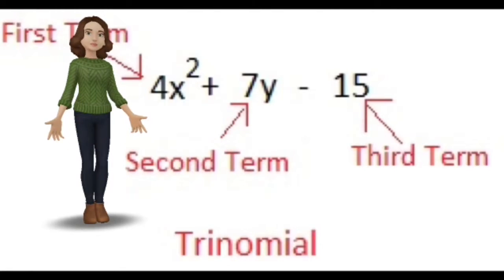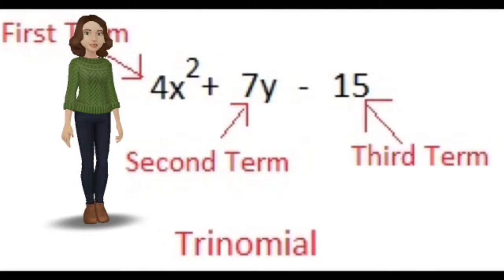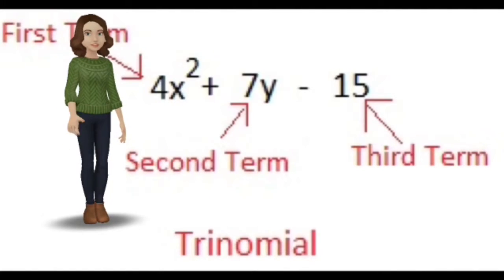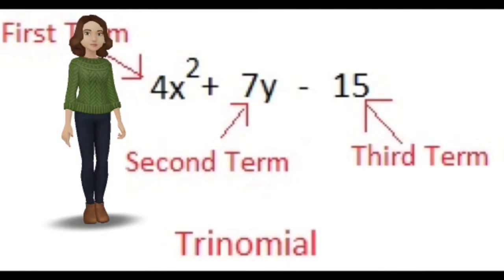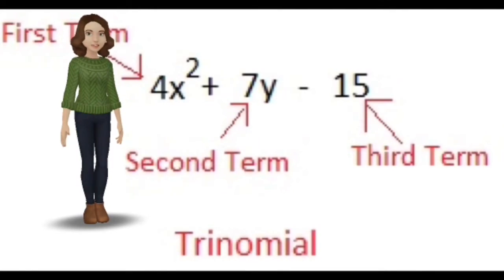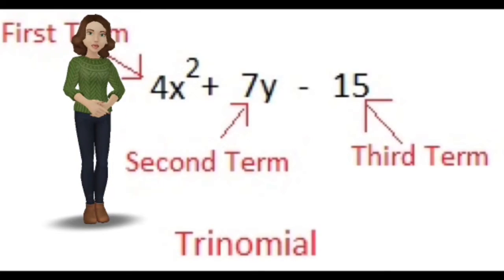In this example, 4x squared is the first term or the monomial, 7y is the second term or the binomial, and the third term, 15, could also be called the trinomial.